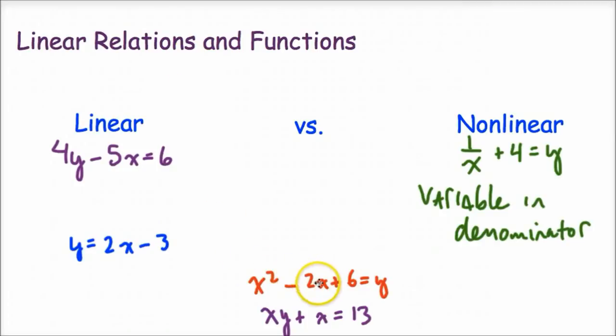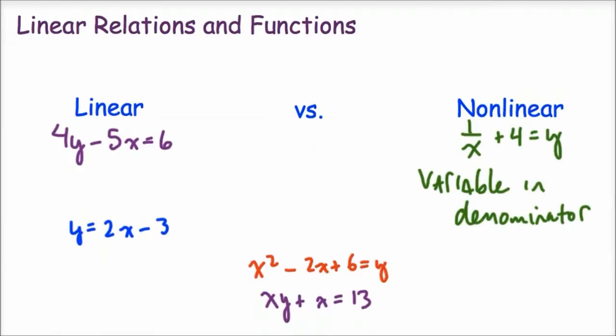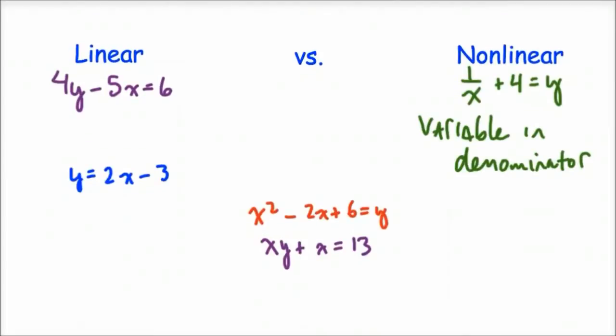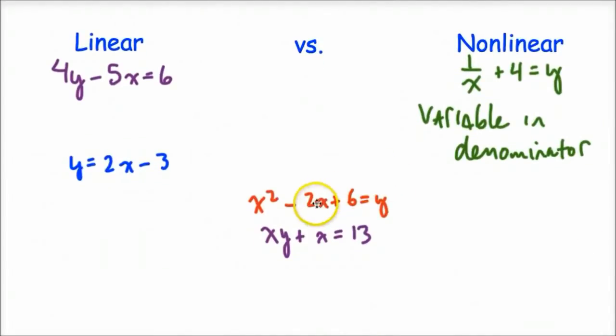Next, we have x squared minus 2x plus 6 equals y. And we should know this one's nonlinear because we know what its graph looks like. It's a quadratic equation. So that means it's going to be a parabola. So we know that that's nonlinear because a parabola is like a curve.